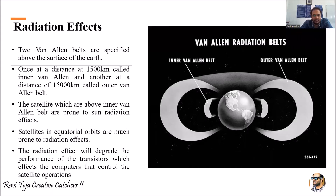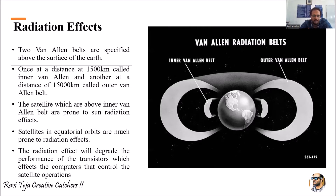Welcome to the course on satellite communications. In today's class, we are going to see how radiation affects the satellites with respect to the orbital path. If we observe the globe, there will be several elliptical paths around the earth. In these elliptical paths there are multiple satellites which keep on moving — these elliptical paths can also be called orbits. In these orbits, all the satellites will be moving and communicating with the earth stations. Even though the satellites are moving in space in the orbital paths, they also experience radiation.